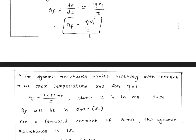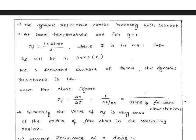The resistance is inversely proportional to current — as current increases, resistance decreases, and current conductivity increases. This is because the potential barrier decreases in the PN junction, causing resistance to decrease and current conduction through the diode to increase.